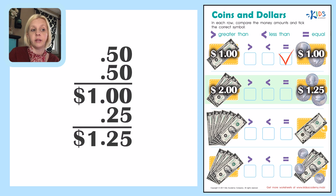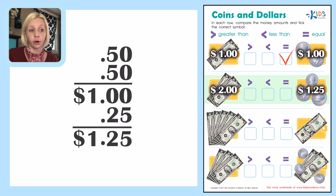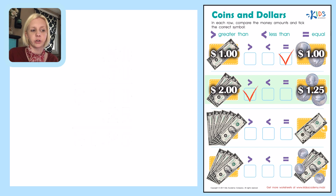Which is greater: two dollars or a dollar twenty-five? The answer is two dollars. So we make the sign face — or eat — the bigger number. The open part faces two dollars, and we call that a greater than sign.